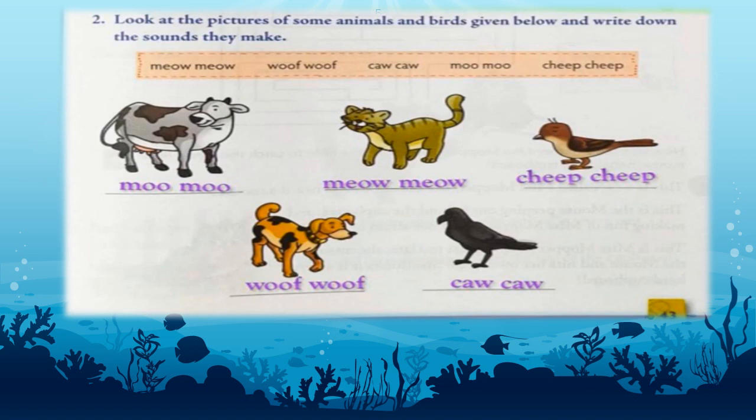The second question is: look at the pictures of some animals and birds given below and write down the sounds they make. The first picture is of a cow, and the sound of the cow is moo-moo. Second picture is of a cat, and the sound of a cat is meow-meow. Third picture is of a bird, and the sound of a bird is cheep-cheep. Fourth picture is of a dog, and the sound of a dog is woof-woof. The last picture is of a crow, and the sound of a crow is caw-caw.